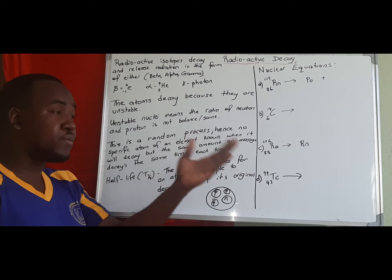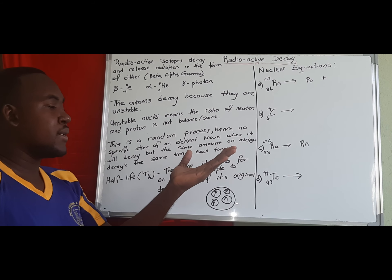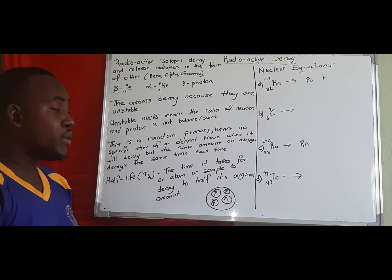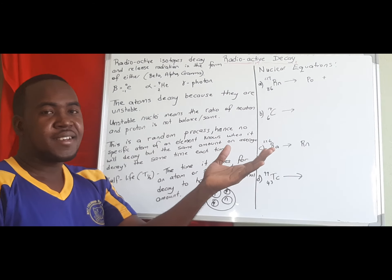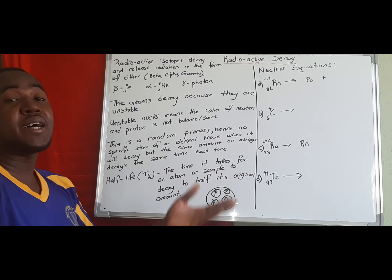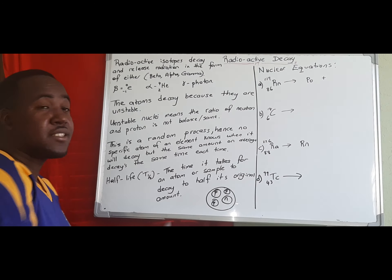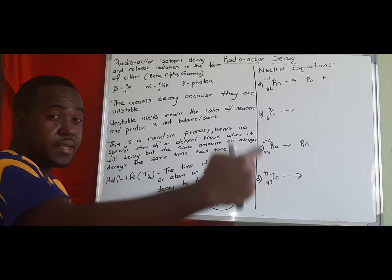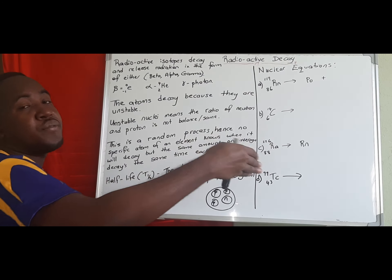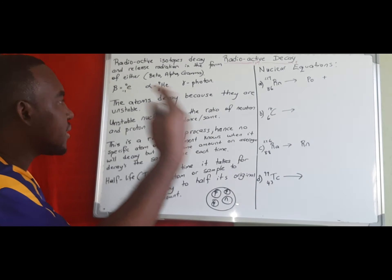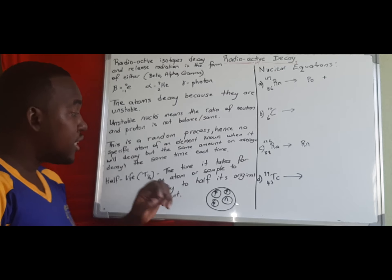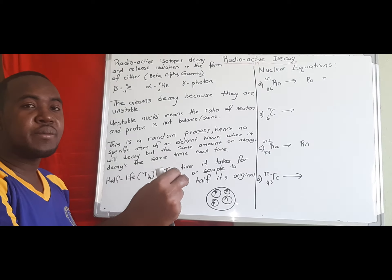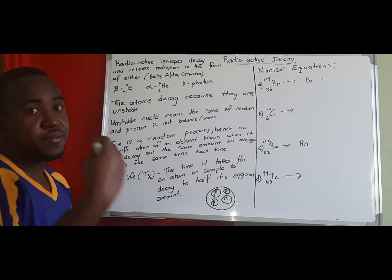Half-life is the time it takes for any amount of a sample to decay to half its amount. If we have 50 atoms of sodium, after one half-life we'll have 25. If we originally had 6, after the half-life we'll have 3. Then from 25 it goes to 12.5, and it continues — each half-life period, half of what was there before will be gone.